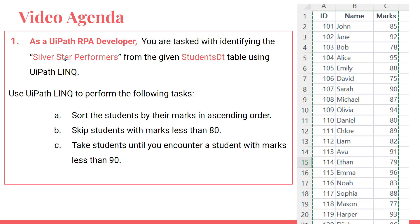Look at the question. As a UiPath RPA developer, you are tasked with identifying the silver star performers from the given student's data table. You can prepare a similar data table — it doesn't have to have all the data rows. You can create some 5 to 10 values in your Excel.